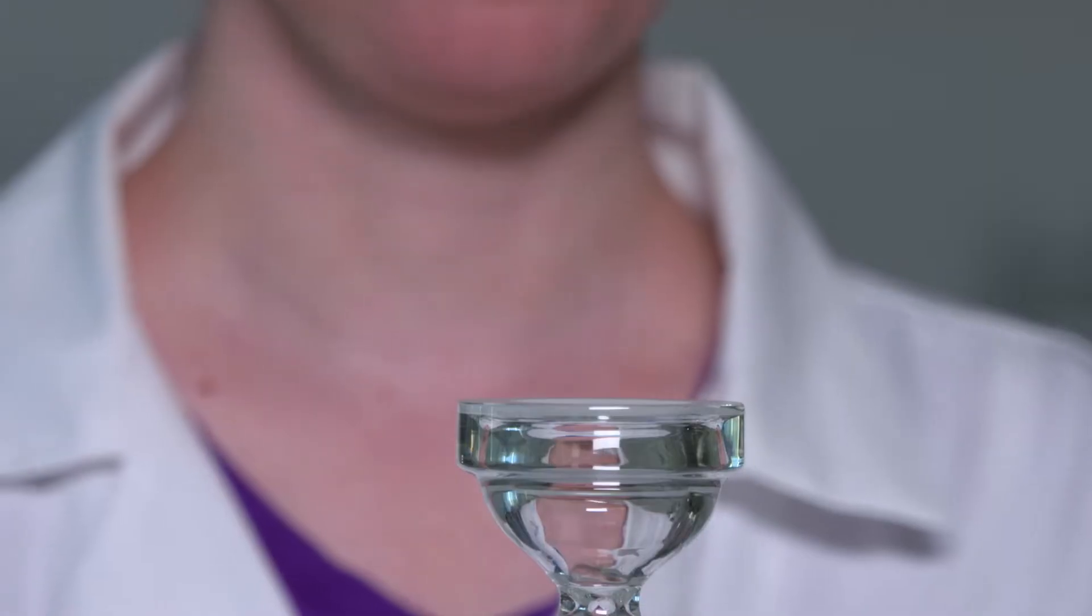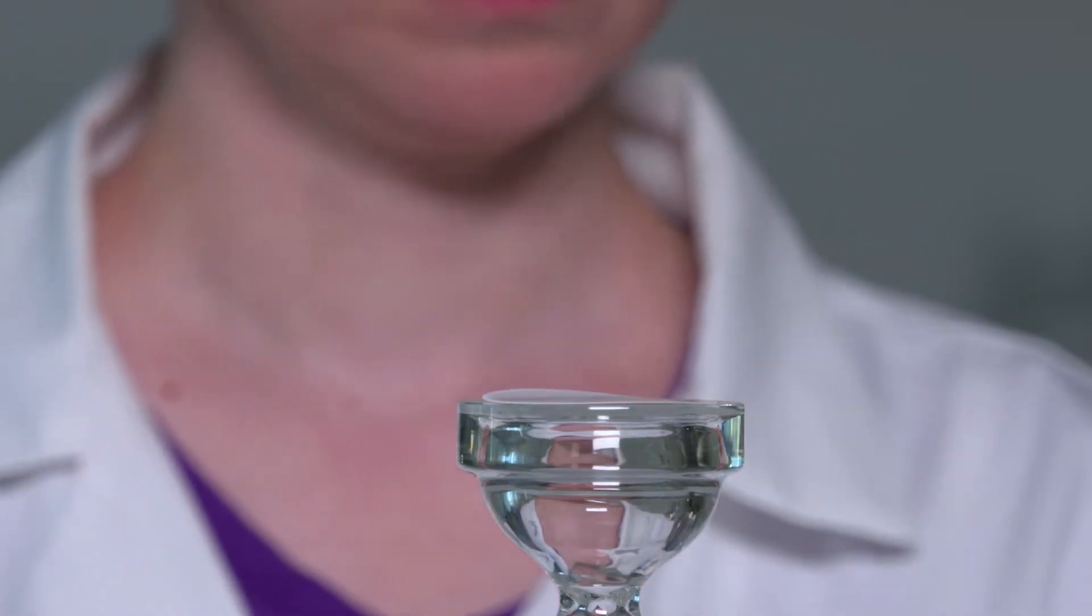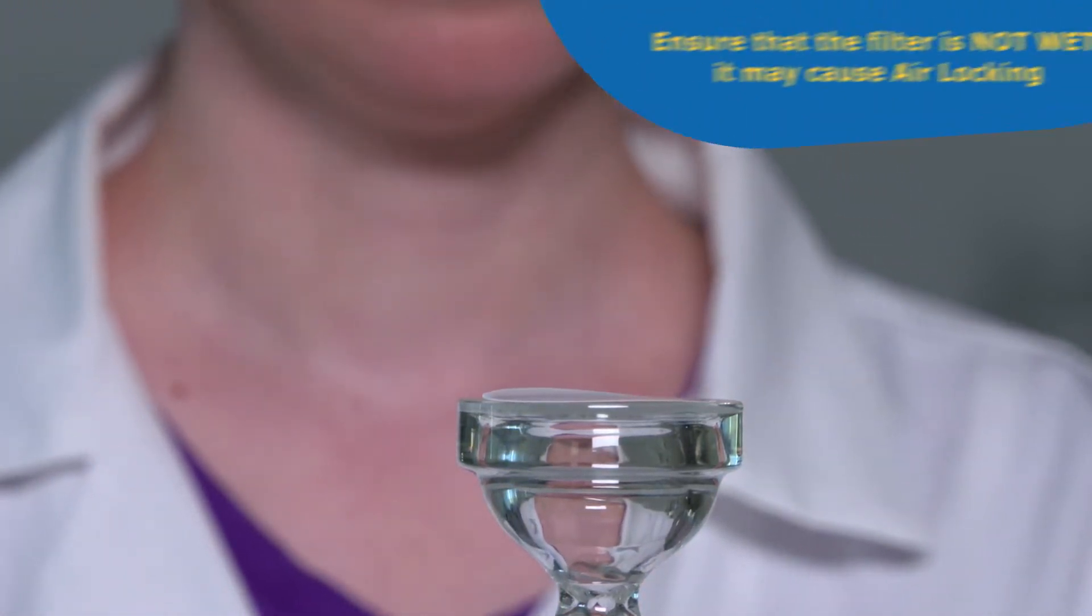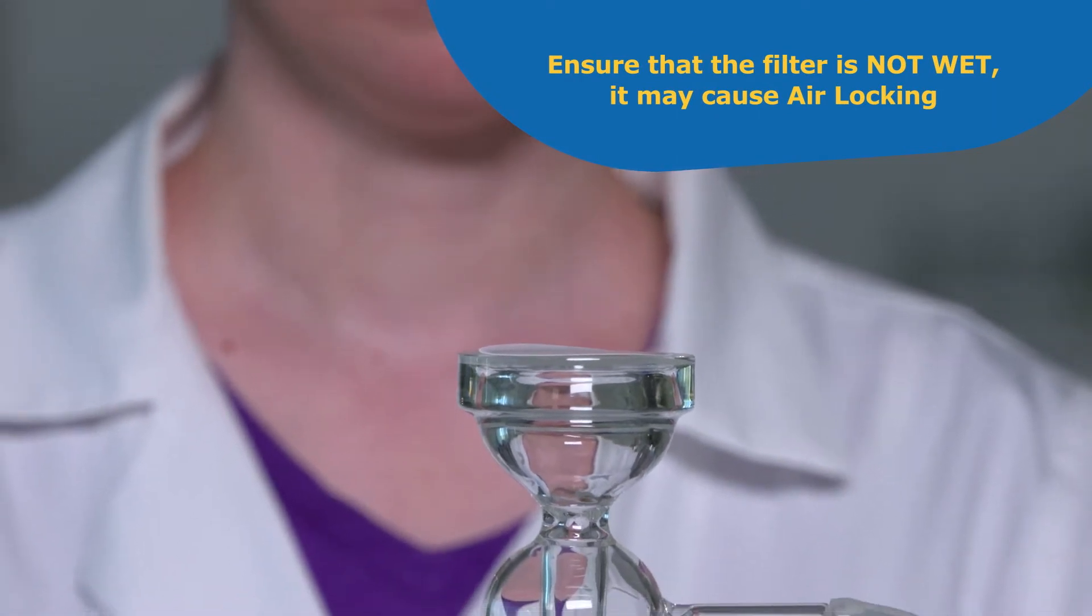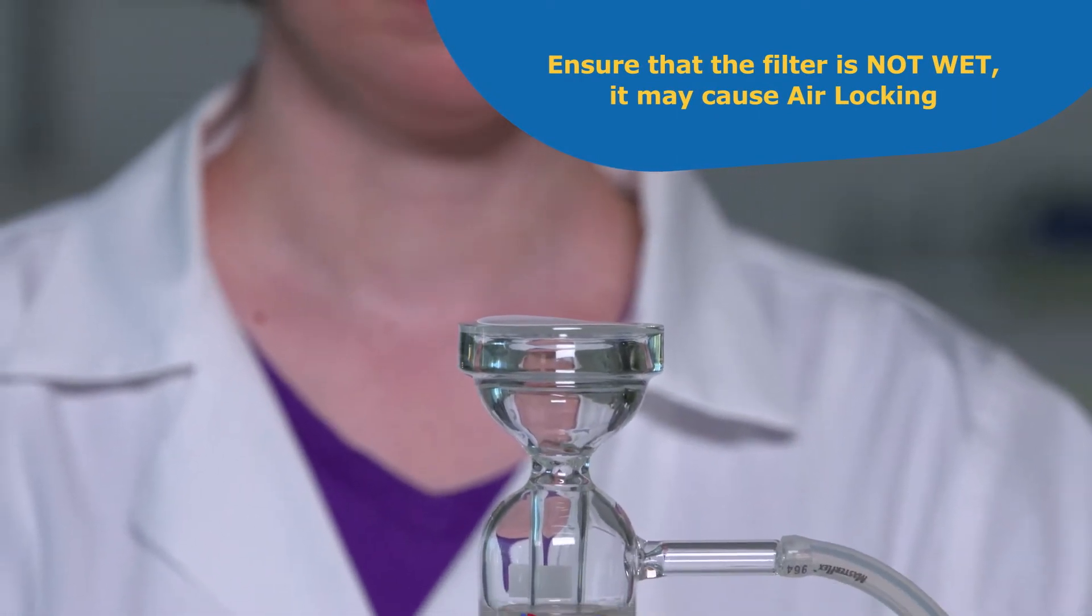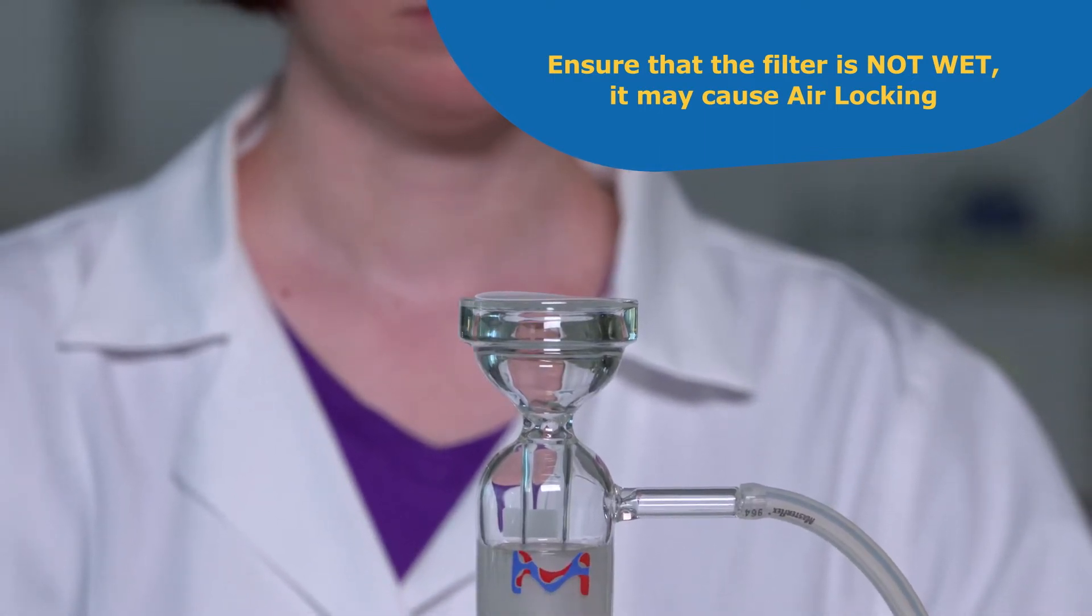With a smooth tip forceps, center a 47 millimeter filter on top of the support surface. Ensure that the filter is not wet as it will prevent the flow of fluid because the vacuum pressure is not sufficiently high to overcome the membrane's bubble point. This is called air locking.